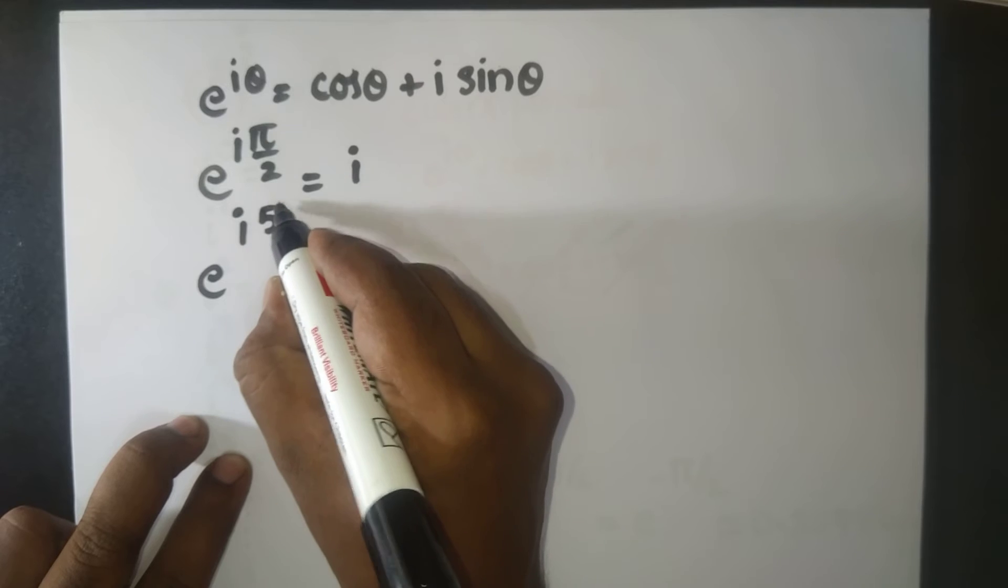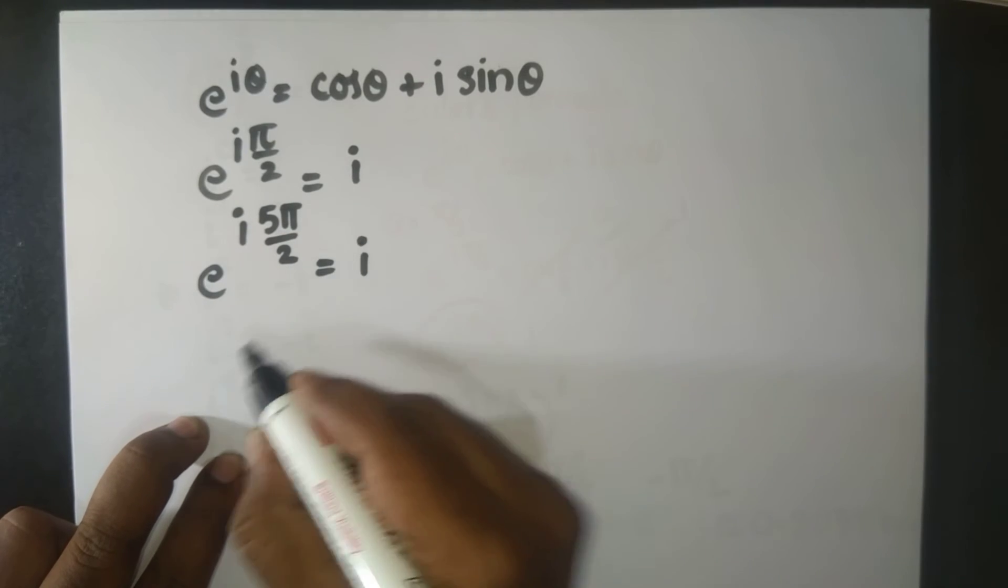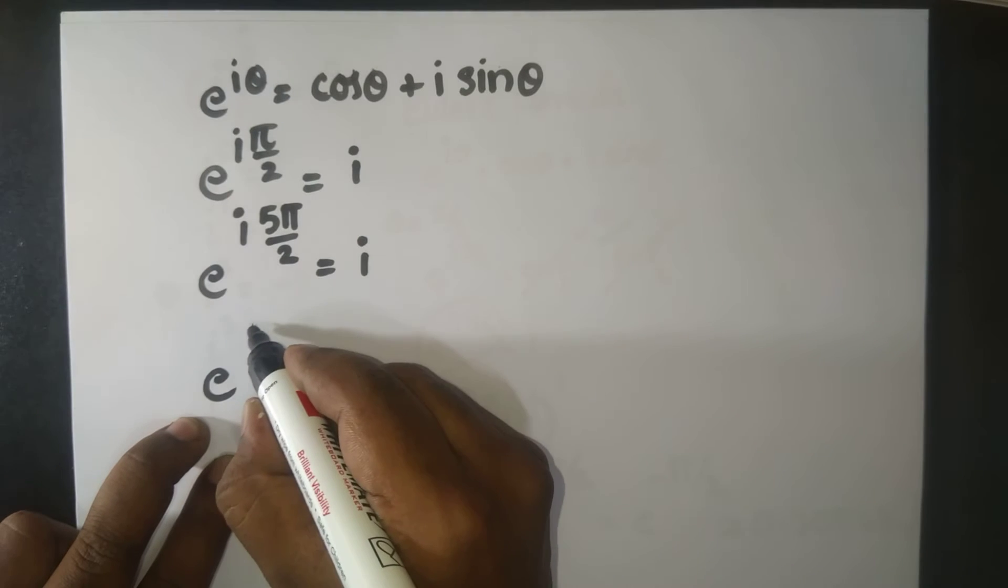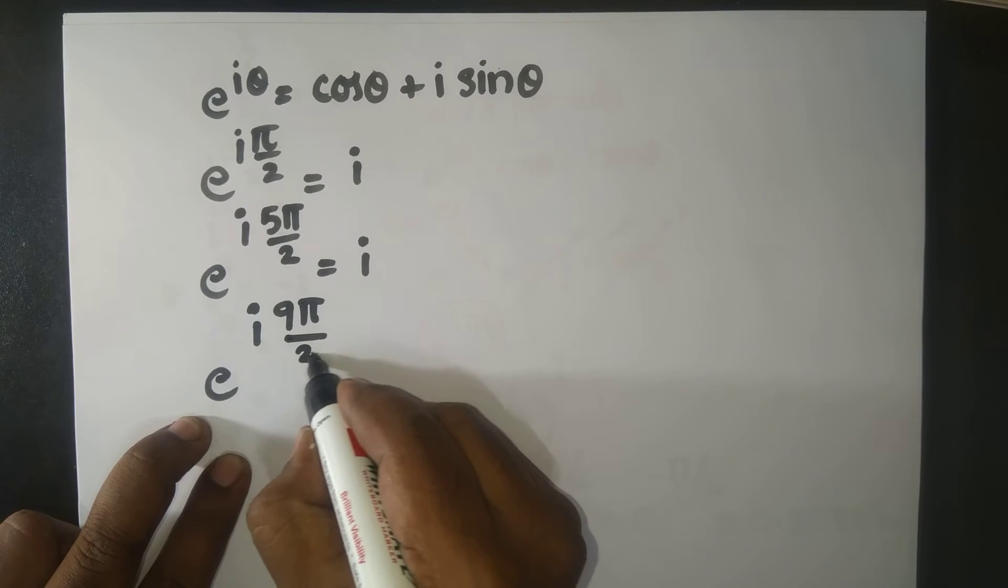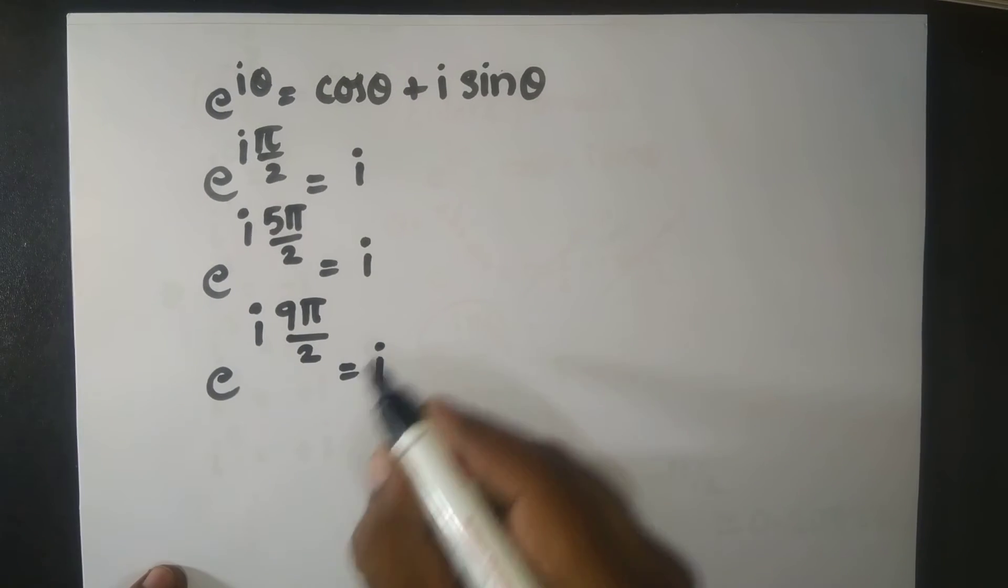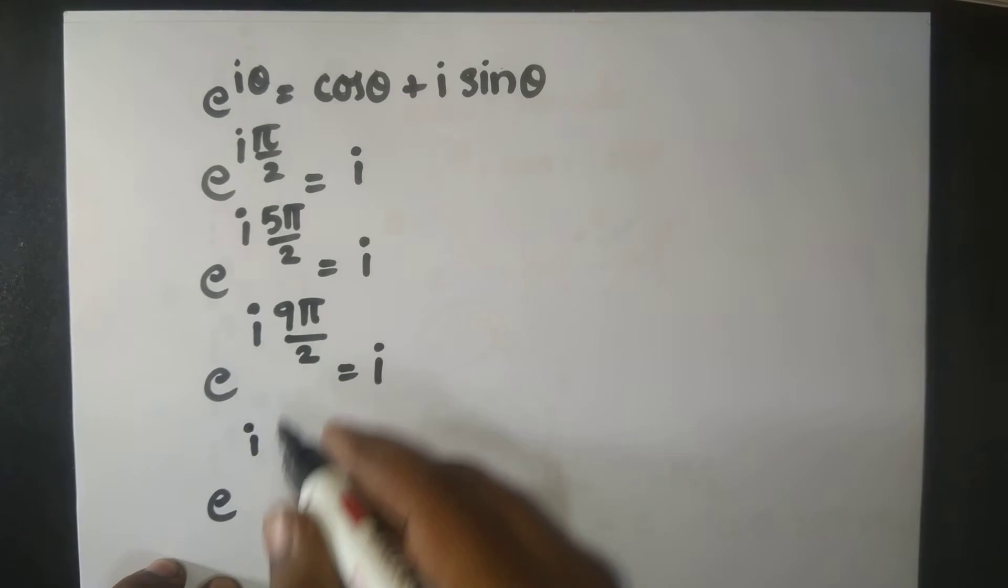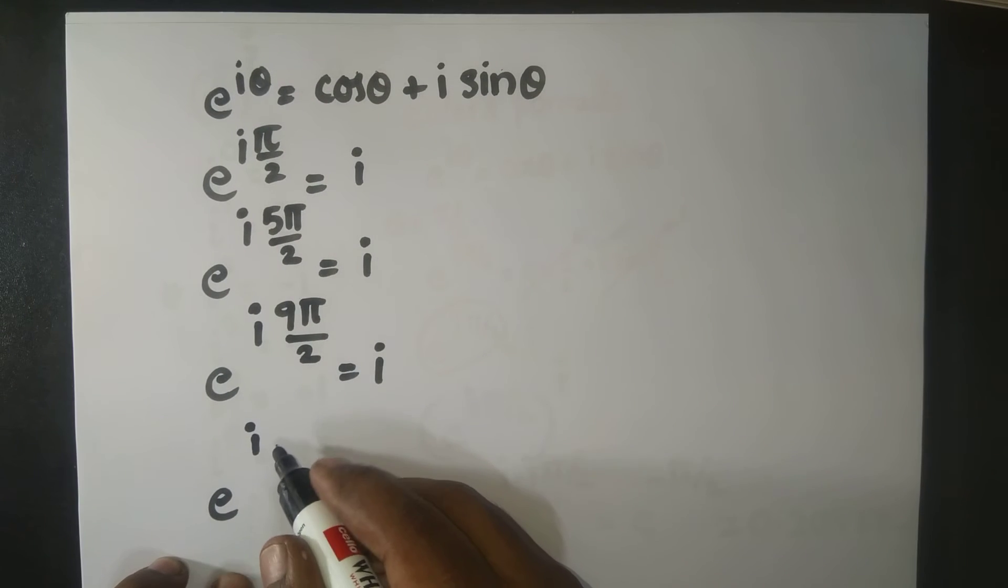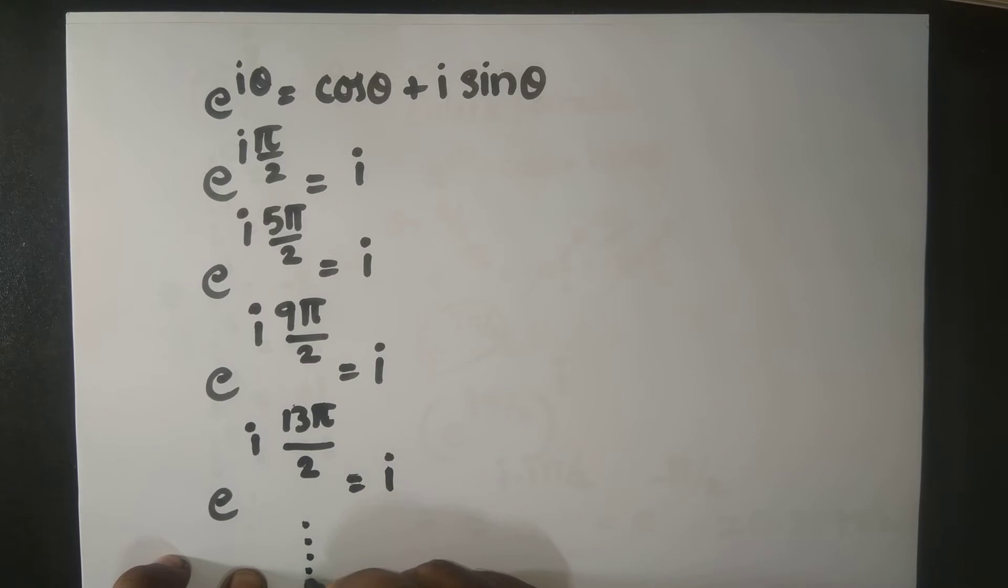Not only for this, e^(i·5π/2) is also equal to i. Or not only for this, e^(i·9π/2) - in this case also we get i. Or just add 4π in the numerator each time, so you get equal to i, and so on.